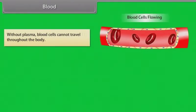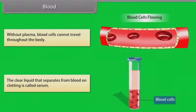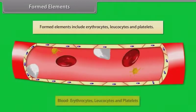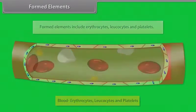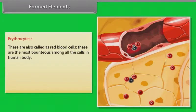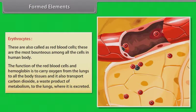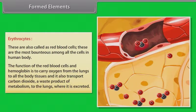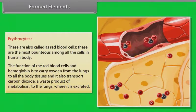Without plasma, blood cells cannot travel throughout the body. The clear liquid that separates from blood on clotting is called serum. Formed elements include erythrocytes, leukocytes, and platelets. Erythrocytes, also called red blood cells, are the most abundant among all the cells in the human body. The function of red blood cells and hemoglobin is to carry oxygen from the lungs to all the body tissues, and to transport carbon dioxide — a waste product of metabolism — to the lungs where it is excreted.